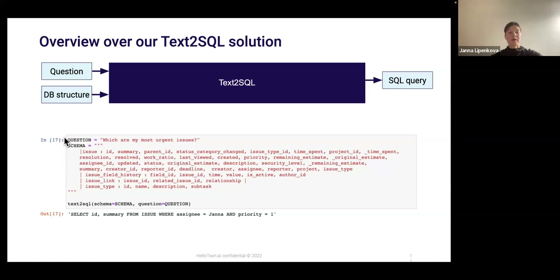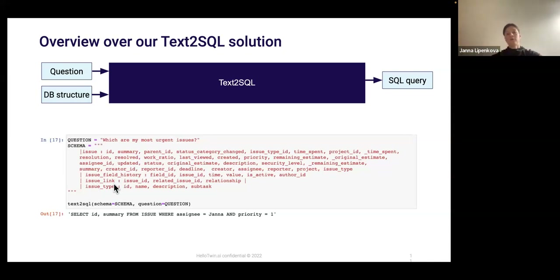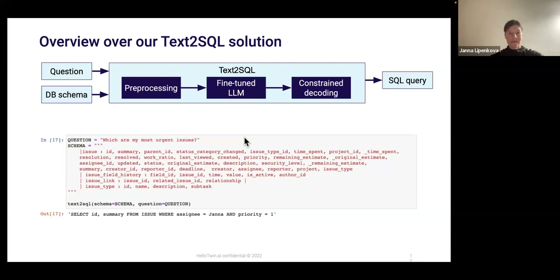Below you can see a quick example: a natural language question — 'which are my most urgent issues' — then a serialization of the database schema starting with the issue table, issue field history, issue link, and so on, each followed by column names. At the output there is the SQL query. So far text to SQL is a black box — let's look inside and see which components are there.